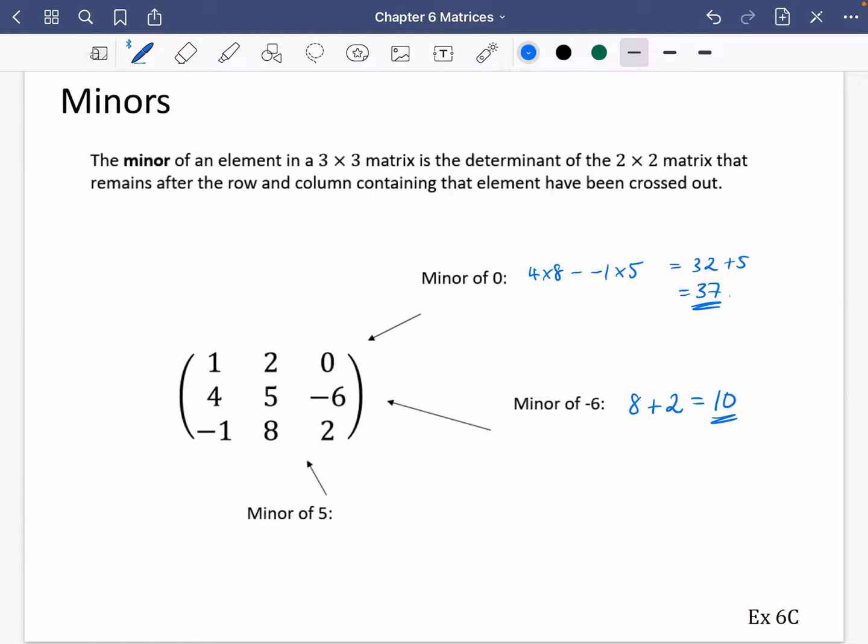And for example, the minor of this 5 that's in the middle—we'll cross through here and here—we'll do 1 times 2, which is just 2, minus -1 times 0, which is just 0, so the minor of that part there is just going to be equal to 2.